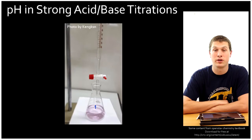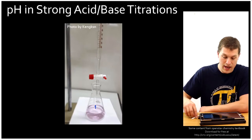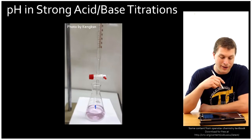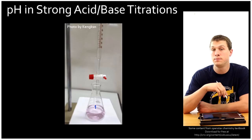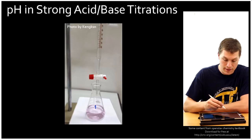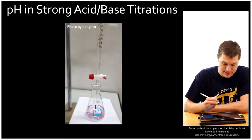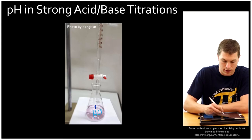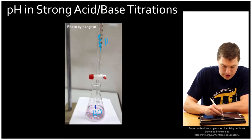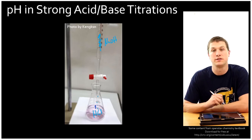Welcome to this episode of Real Chemistry. I'm Dr. Morris. Today we're going to be looking at calculating pH during strong acid-base titrations. We're going to start with a strong acid down in our flask, like HCl, and we're going to start with NaOH up here, and we're slowly going to add NaOH down into our HCl.